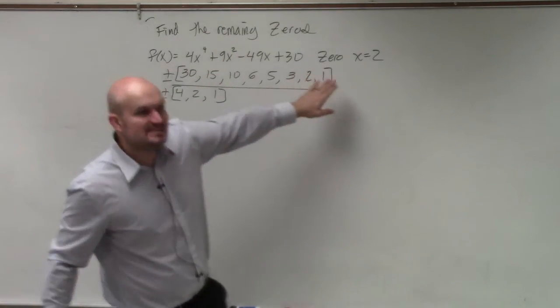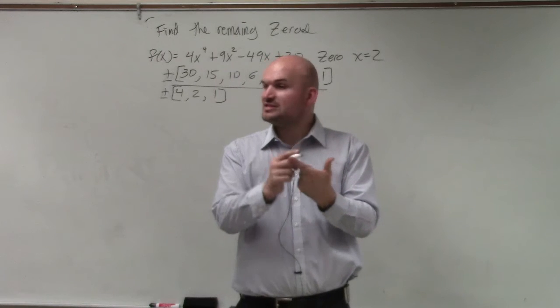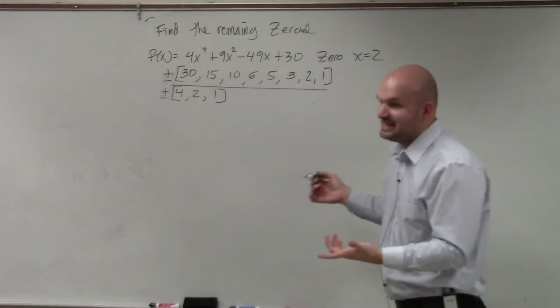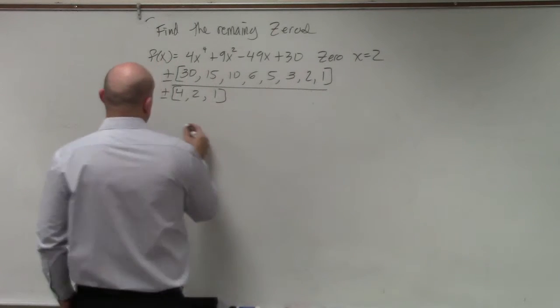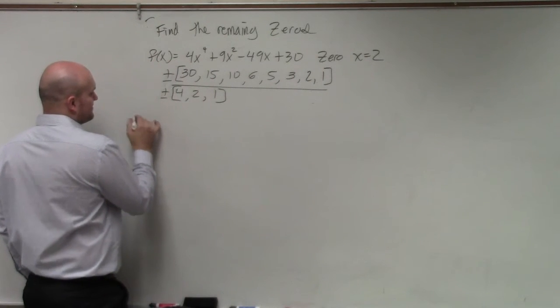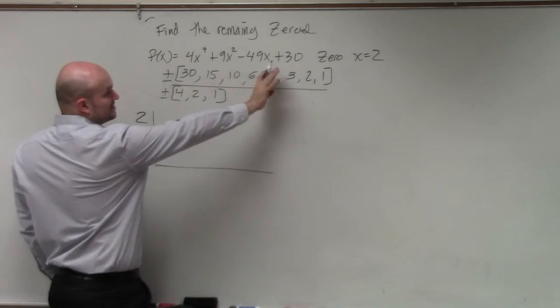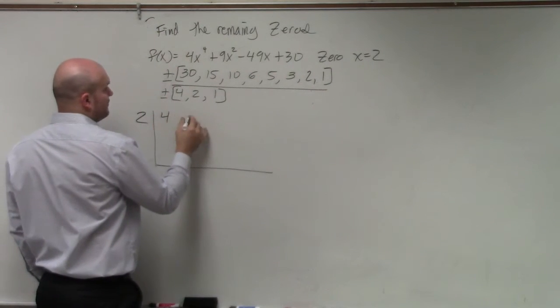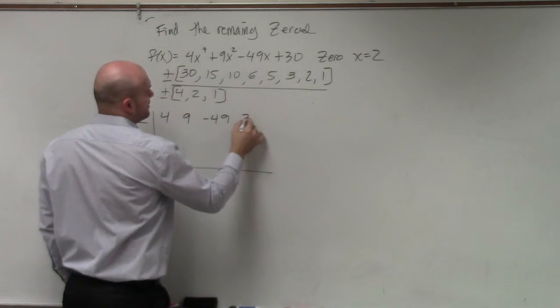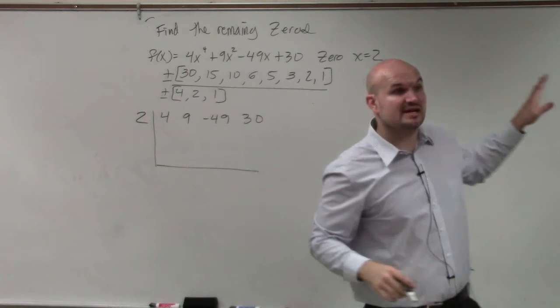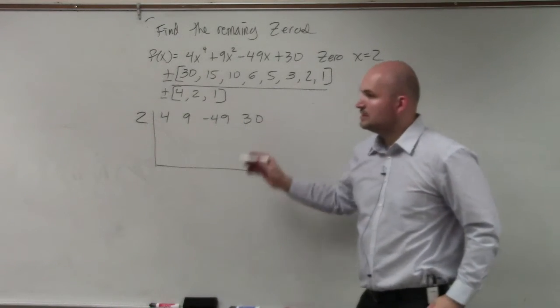So, if we're given one zero, what could we do? We could use long division or synthetic division, correct? But since we have a zero, I think it would be easiest to do, I'm sorry, synthetic division. So, what I'll do is I'll set up synthetic division. Make sure it's in the descending power order, which it is. 4, 9, negative 49, and 30. Again, we're using the zero, right? Use synthetic division, use the zero. So, again, synthetic division, which we did last night.